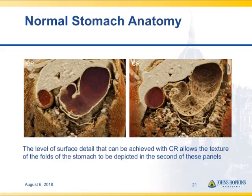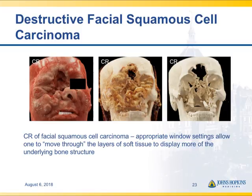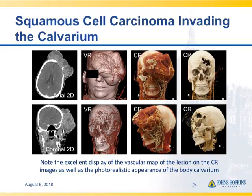Look at the stomach and gastric folds — the image on the left shows cinematic rendering with the fluid in the stomach, and then I take the fluid away to reveal that fold pattern. Very impressive. For clinical applications, here's a large destructive squamous cell carcinoma with bone destruction and orbital destruction. You can see the defect from muscle to soft tissue to bone, with this large squamous cell carcinoma invading the calvarium, seen from axial and coronal images showing the extent of the tumor. Very good visualization of very bad disease.